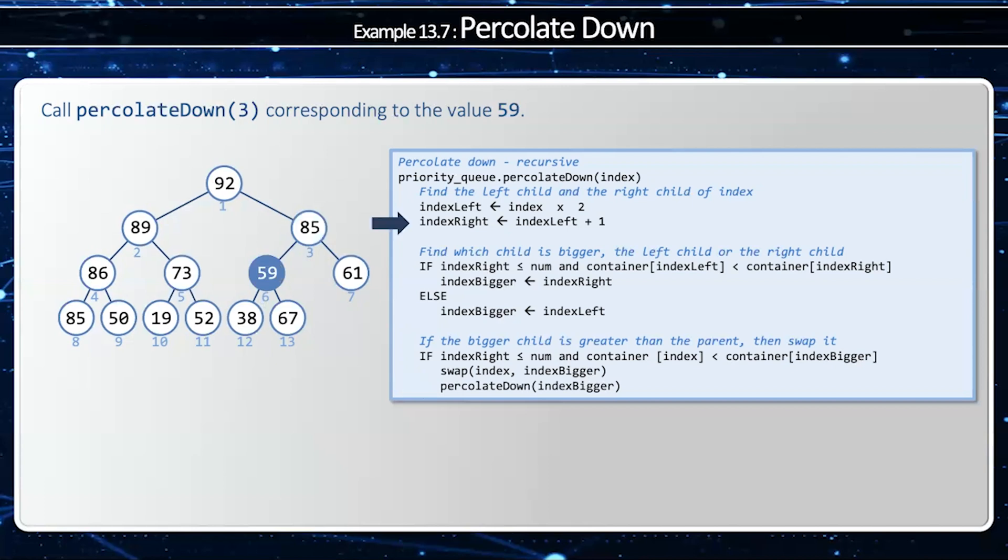And I'm going to compute a new set of indices, which would be 12 and 13, and it looks like my right index is bigger. So I'm going to swap those elements. Then I'm going to call it one final time, and my index will be 26 and 27, which is off the chart, and looks like I'm finished.